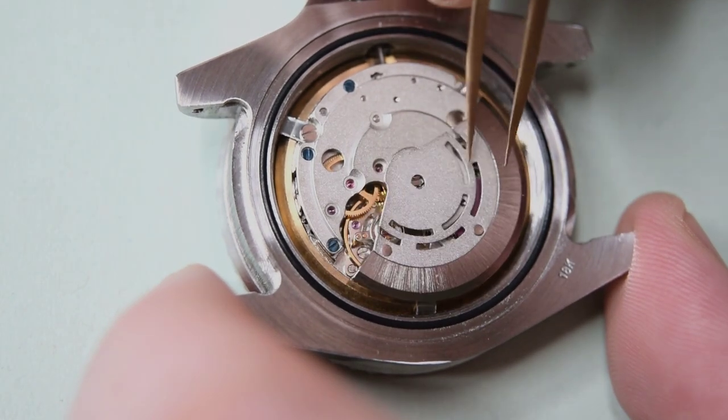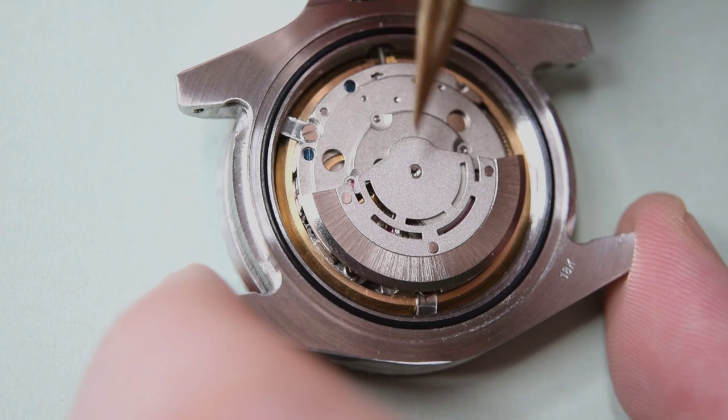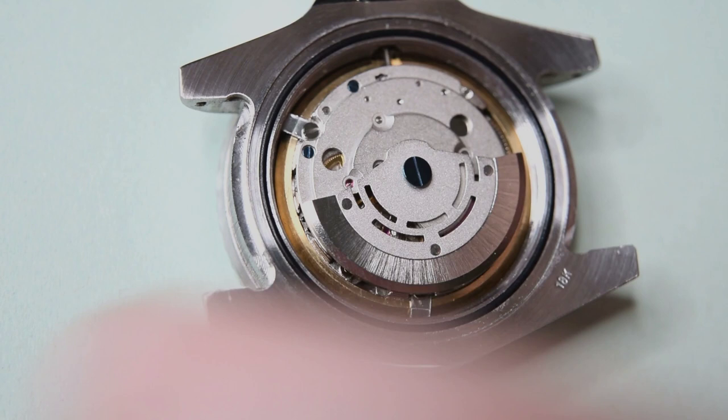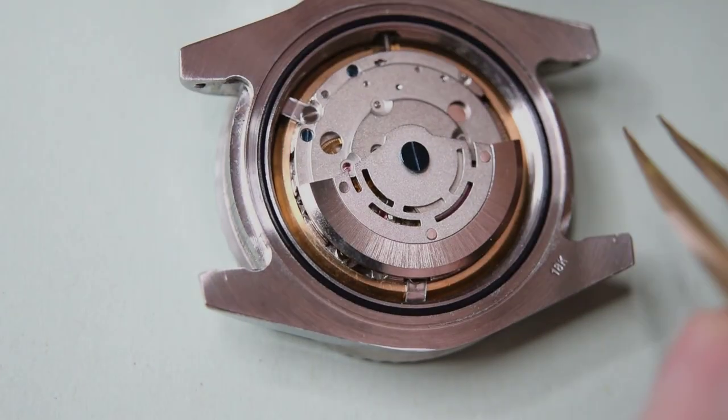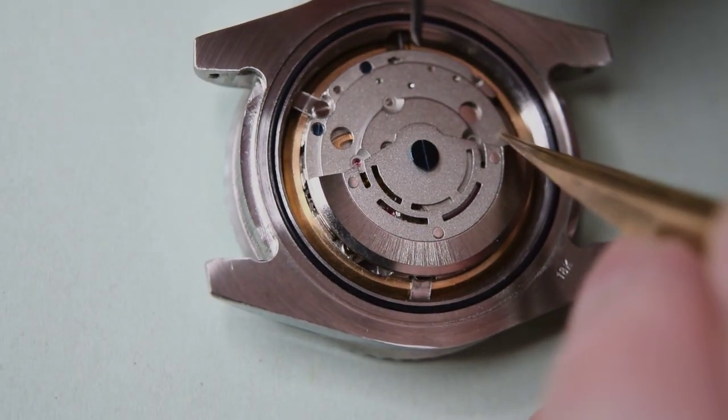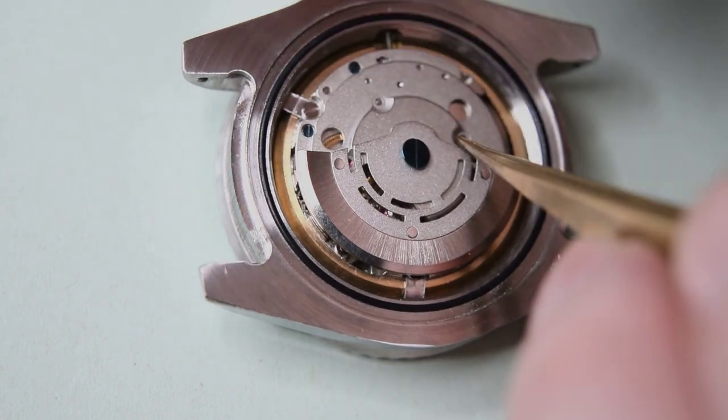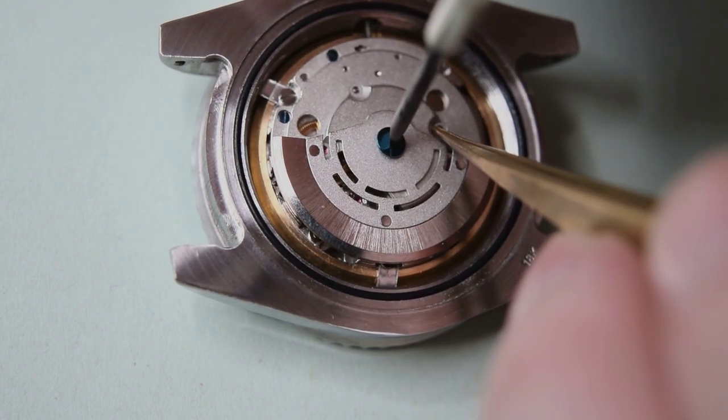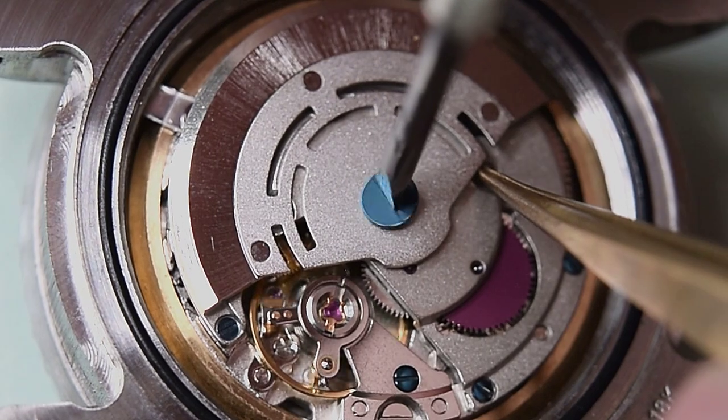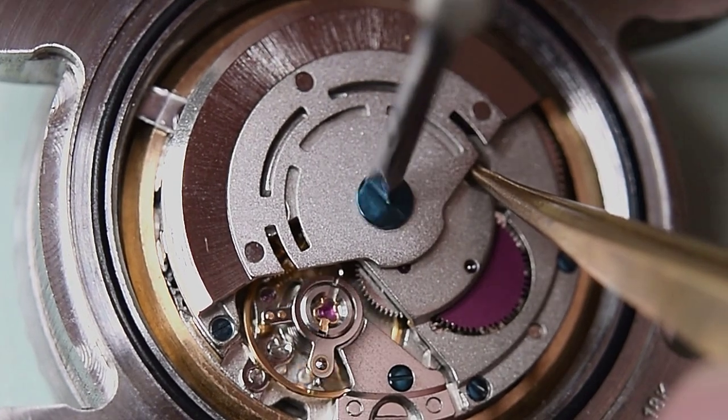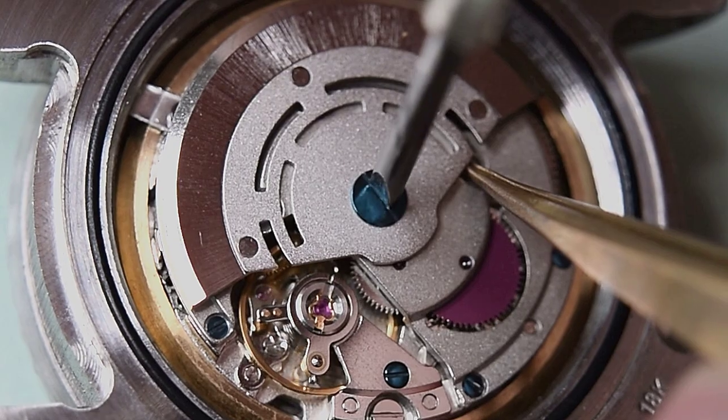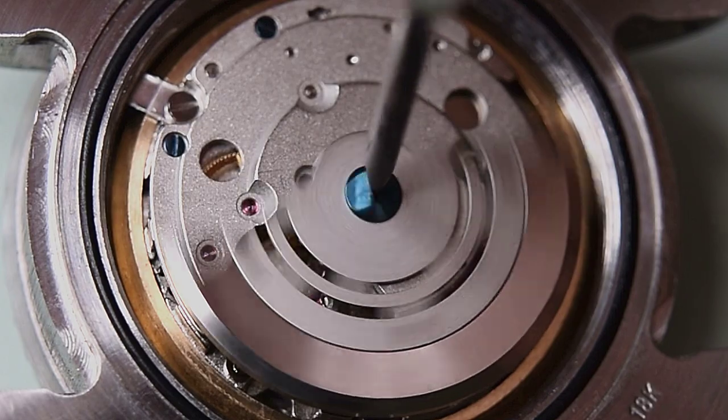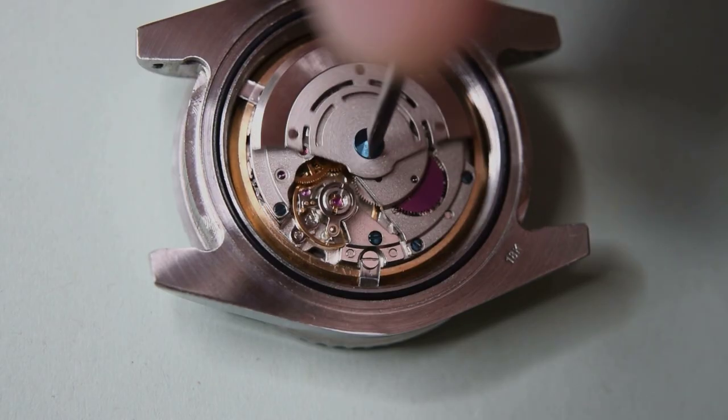And now the rotor that winds the main spring. Here it is a one directional rotor, so it winds the main spring only when it rotates in one direction. Okay, one screw and it's okay. But although it is a one directional rotor, it winds the main spring properly, so it doesn't have any influence to winding the main spring. That's not a problem.